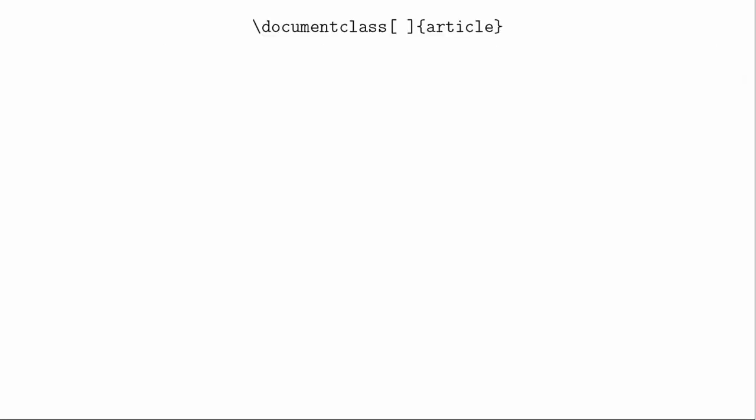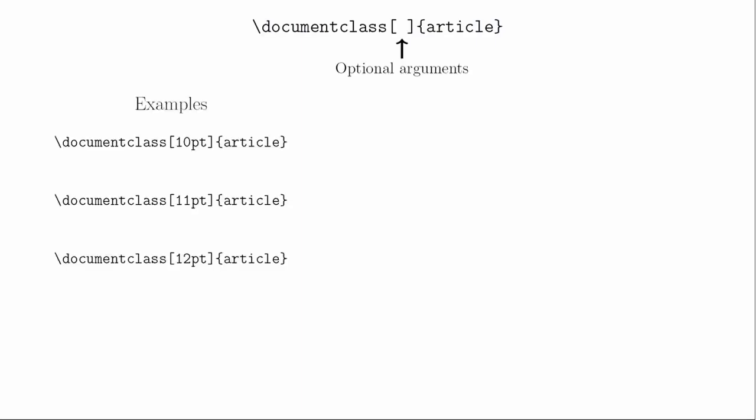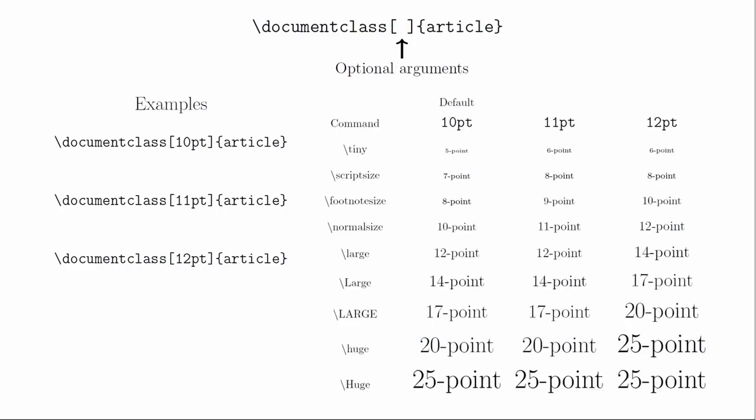The first place we can modify the text is in the document class declaration. Inside of these square brackets, you can put optional arguments. You can set the standard font size to be 10, 11, or 12 point font. The default is 10 point. This isn't the only way that we can impact the size of the font — this just sets the default font size. When you're inside the document, there are nine different font sizes you can choose from.